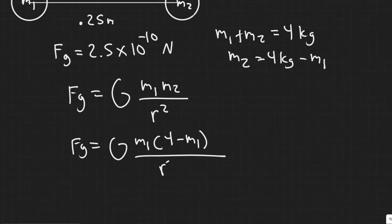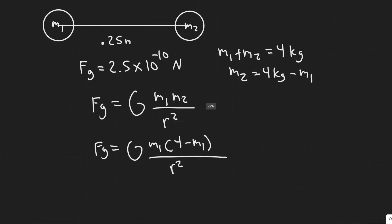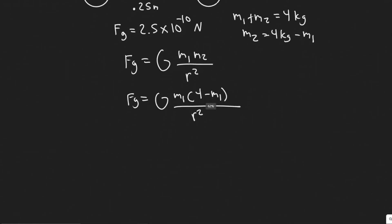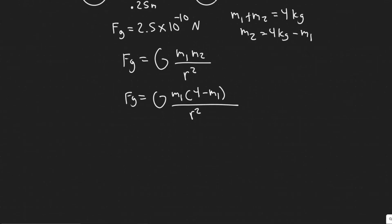So if we plug that in we get m1 and then m2 is 4 minus m1 divided by r squared. And so now you can see that we only have the one variable in the equation and it's really just a matter of plugging things in and solving.